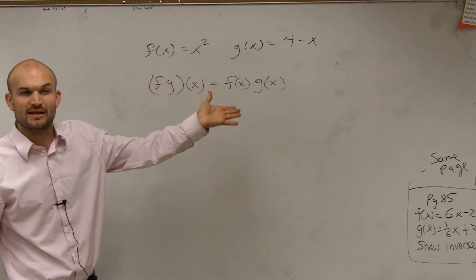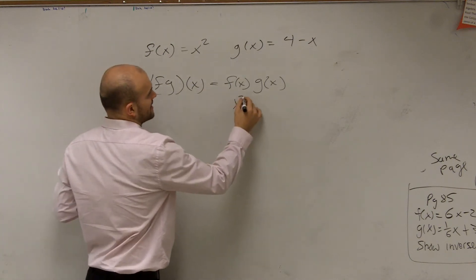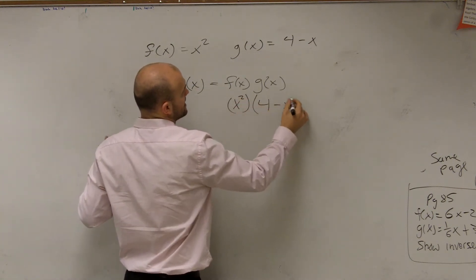So we'll just take one function, multiply the other. Remember when we do inputs, we put them in our parentheses. x squared times 4 minus x.